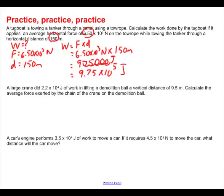A large crane did 2.2 times 10 to the fourth joules of work in lifting a demolition ball a vertical distance of 9.5 meters. Calculate the average force exerted by the crane. So what do we have here? We're told the work is 2.2 times 10 to the fourth power joules. So they gave us the work. They also give us the distance that the crane lifted at 9.5 meters. And what they're asking us to find is the force. That's the question mark.